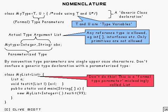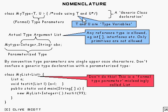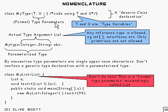Let's get some of this terminology sorted out. Here we've got a generic class declaration and these here, T and U, are formal type parameters, or just type parameters if you prefer.